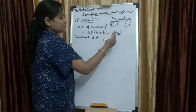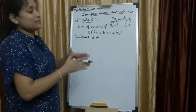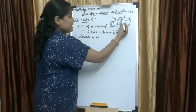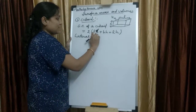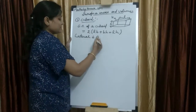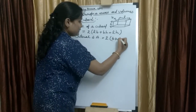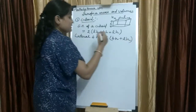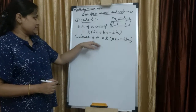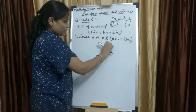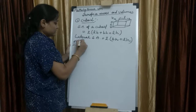Lateral surface area is what you get when you remove the bottom and top from a cuboid — the remaining area is the lateral surface area. The top has area l×b and the bottom also l×b, so we remove those. Lateral surface area equals 2(bh + lh), whereas total surface area is 2(lb + bh + lh).